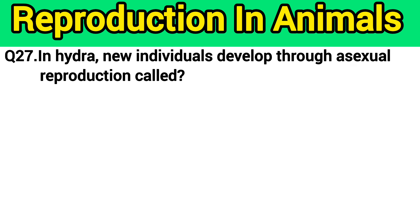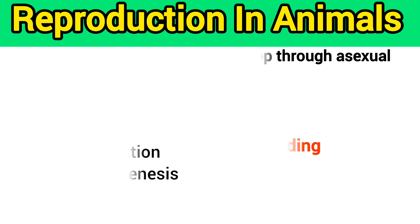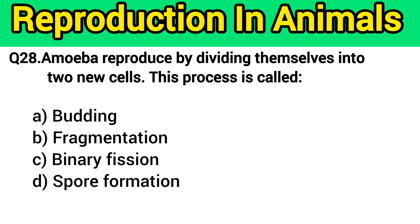Question number 27: In hydra, new individuals develop through asexual reproduction — this process is called? The right answer is option B — budding. Question number 28: Amoeba reproduce by dividing themselves into two new cells — this process is called? The right answer is option C — binary fission.